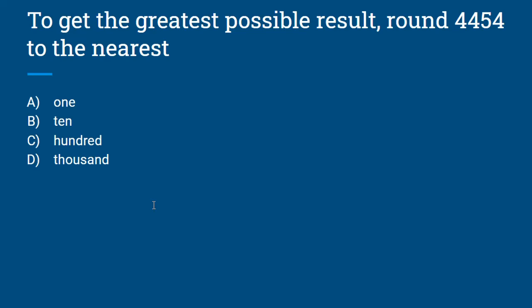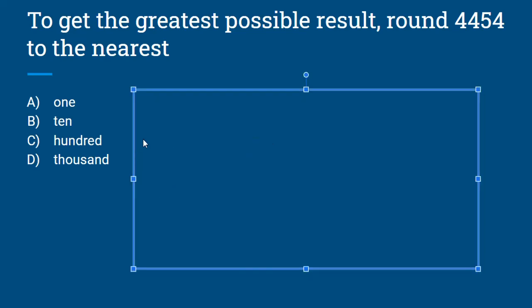To get the greatest possible result, round 4,454 to the nearest A) one, B) ten, C) hundred, D) thousand. Let's go through rounding all of these. We can't round to the ones place because there isn't any number after 1, so A is not going to be an option.